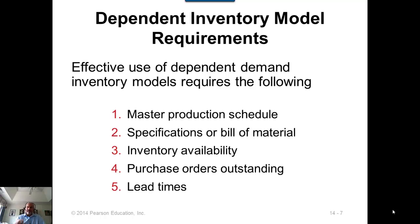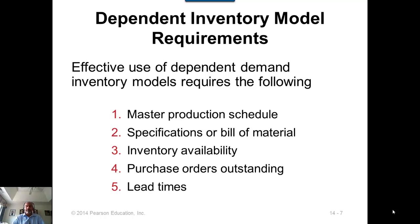The third prerequisite is inventory availability — how much inventory we have in stock. Fourth is purchase orders outstanding: orders already placed with a promised delivery date, called scheduled receipts. These inventories are not physically in stock, but there is a vendor commitment as to when those quantities will be available. Fifth is lead time — when you place an order with the shop floor or vendor, how long it takes to be fulfilled. These five prerequisites are needed for MRP computations to be completed successfully.